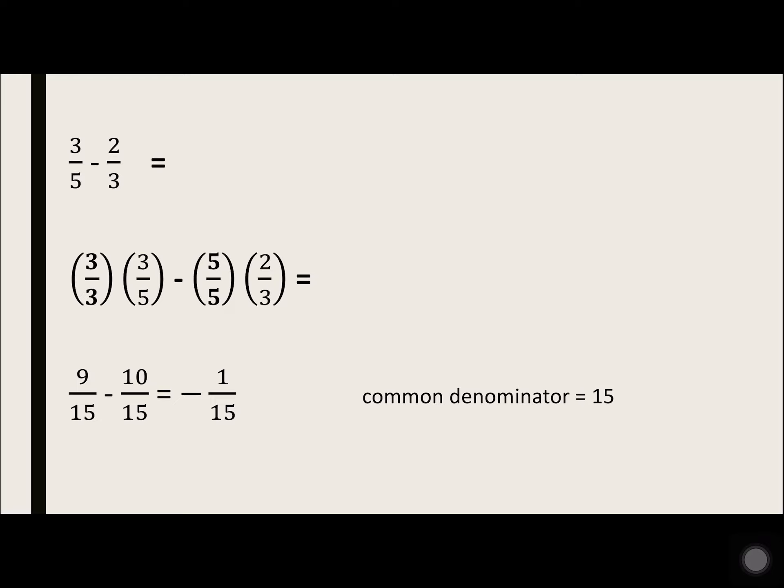Remember, straight across. The fraction on the right had a 3, so we need to multiply it by 5 to get 15.